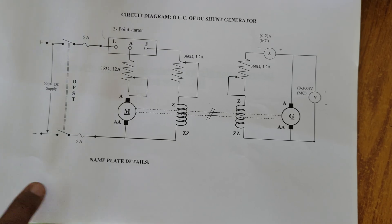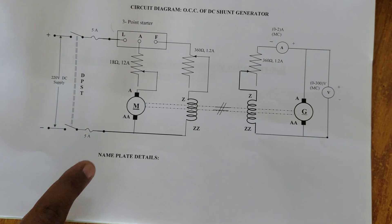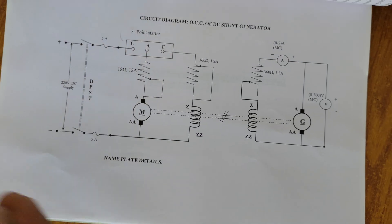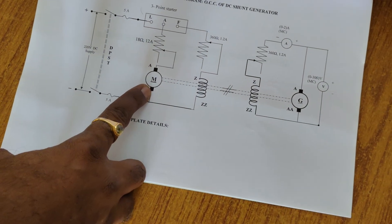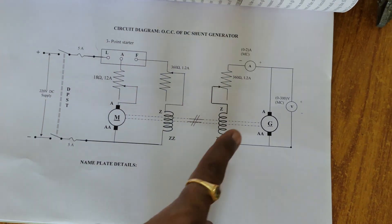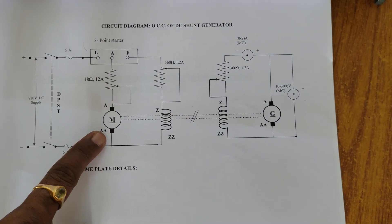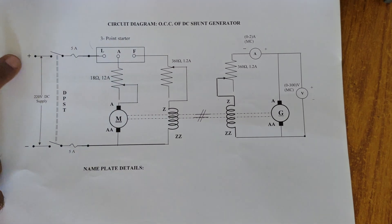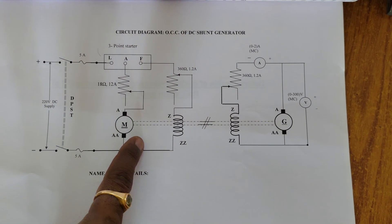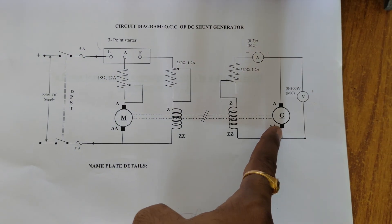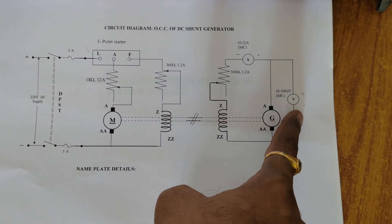Then we have to connect our circuit diagram. In this particular circuit diagram, we clearly observe the different components: this one is a motor, followed by this one is a generator. The input for the motor is electrical energy; it converts that to mechanical energy, which is coupled to the generator, and then we can expect some electrical power output.